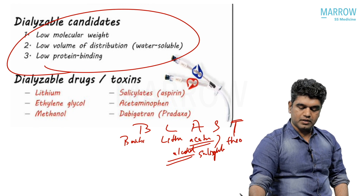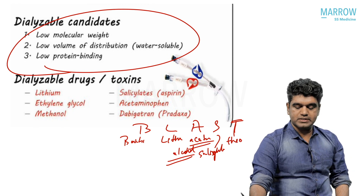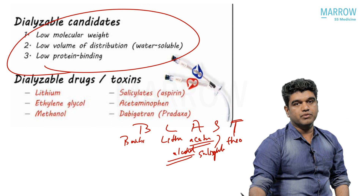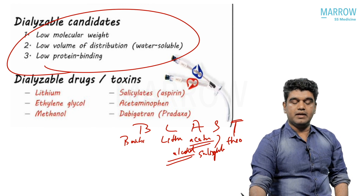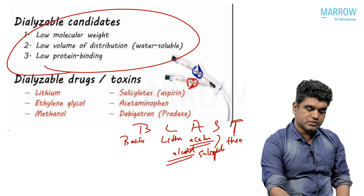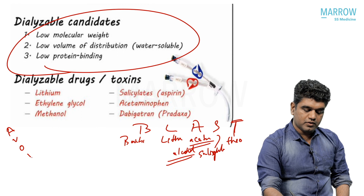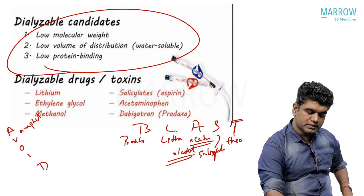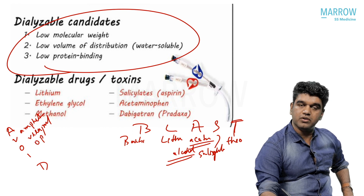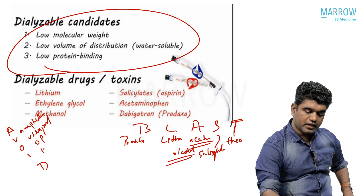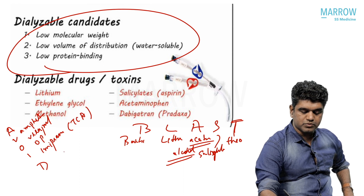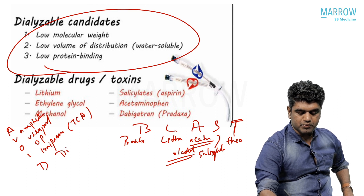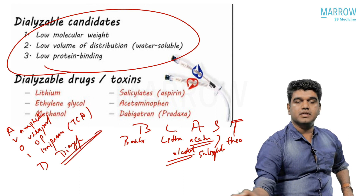Also, alcohol is included under BLAST. Avoid dialysis in the following: amphetamine toxicity, verapamil toxicity, organophosphate toxicity, imipramine (TCA) toxicity, and diazepam toxicity.